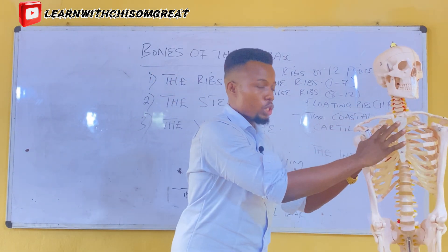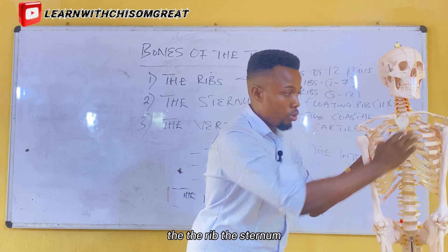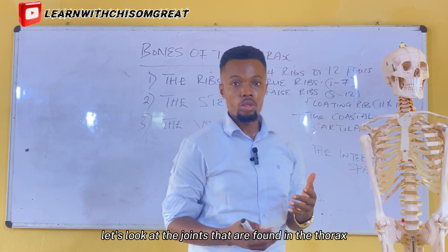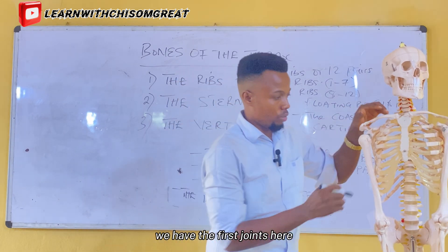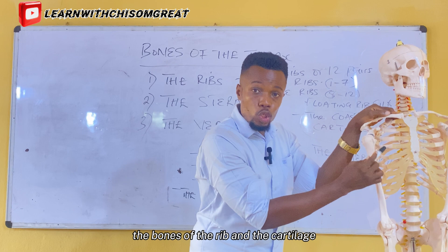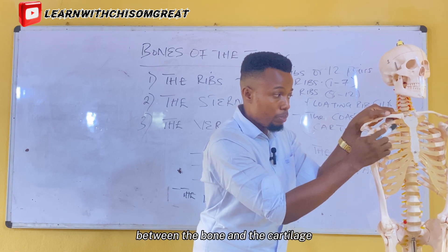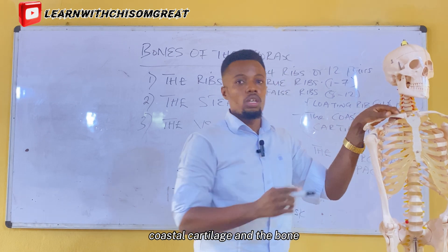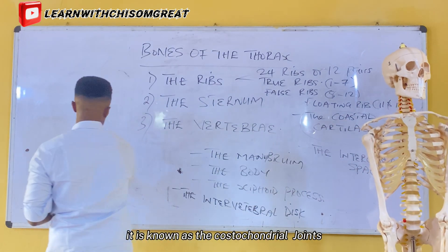Having seen the features of the thorax — the thoracic wall, the thoracic cage, the rib, the sternum, the thoracic cavity, and the vertebrae — let's look at the joints found in the thorax. There is a joint between the rib bone and the costal cartilage, and this joint is known as the costochondral joint.